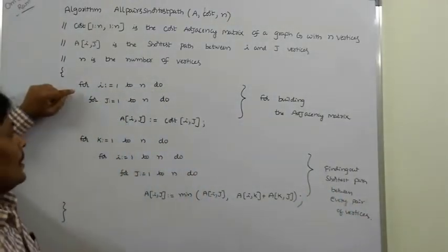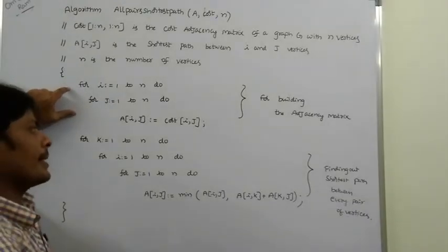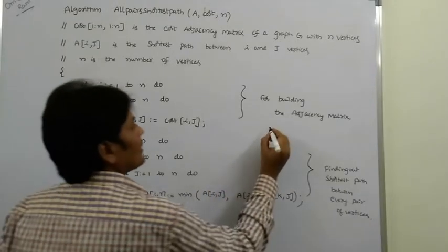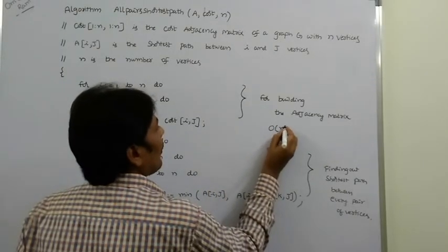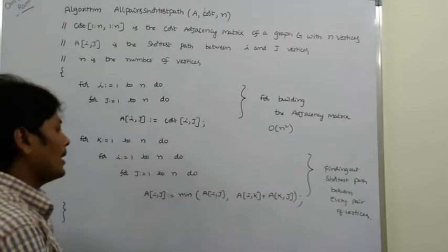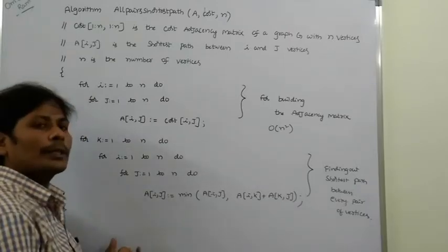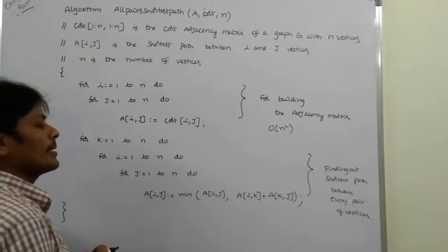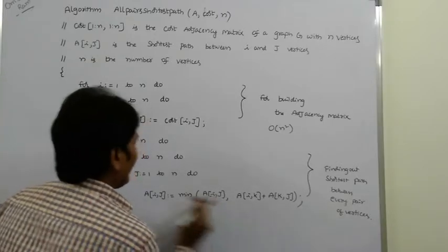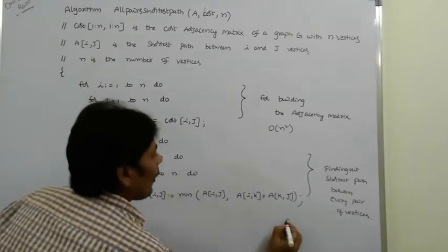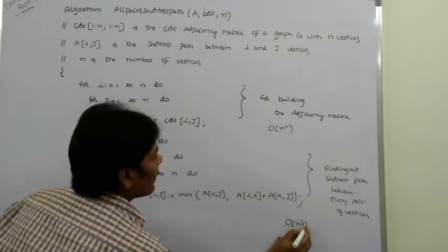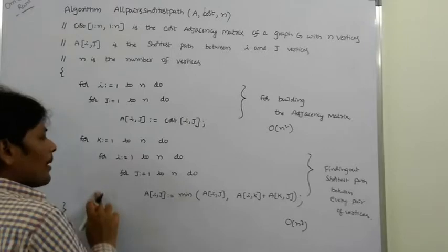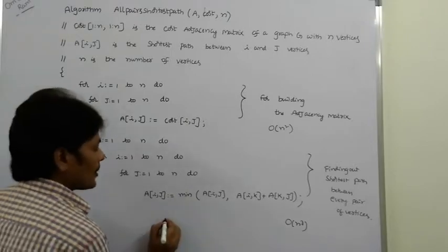Building the adjacency matrix uses two for-loops, so its cost is O(n²). Finding the shortest distance between every pair of vertices takes O(n³) because of the three nested for-loops.